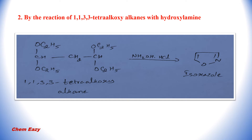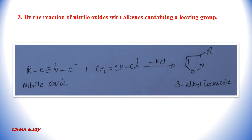In the second method, a tetraalkoxyalkane reacts with hydroxylamine and produces Isoxazole. In another method, nitrile oxide reacts with an alkene containing a leaving group to produce 3-alkyl Isoxazole — one of the derivatives of Isoxazole.